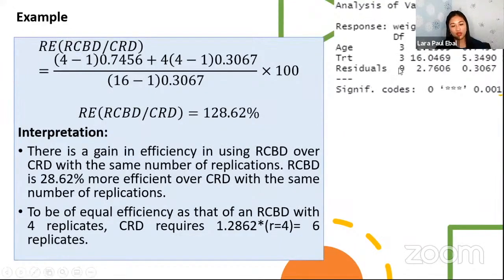Recall the formula, the ANOVA result that we have in the example. In the formula here, we can plug in the values. So this 0.7456 is just your mean square for the block.